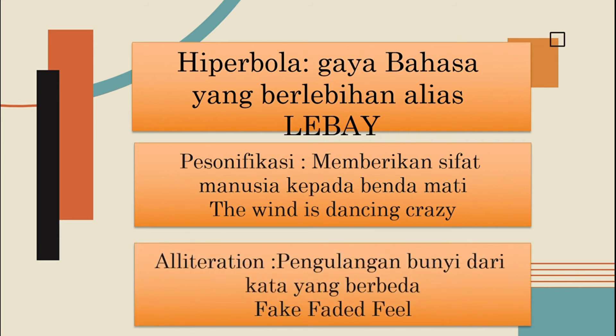Ini alliteration. Alliteration ini adalah pengulangan bunyi dari kata yang berbeda. Biasanya puisi-puisi banyak melakukan alliteration. Contohnya: fake faded feel — ada pengulangan dari bunyi F. Nanti akan banyak lagi majas-majas atau gaya bahasa yang akan kita bahas pada pertemuan selanjutnya.